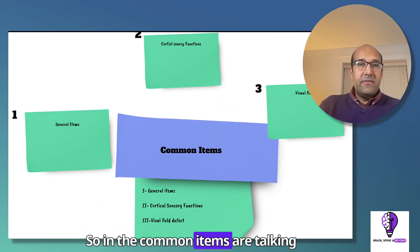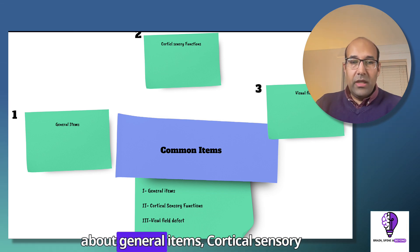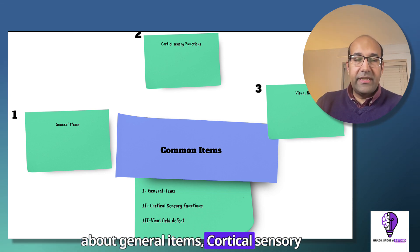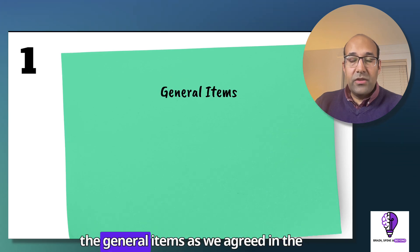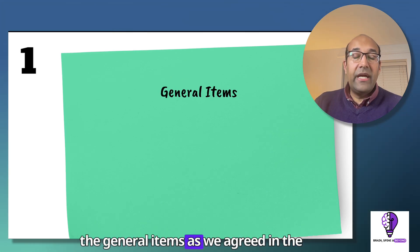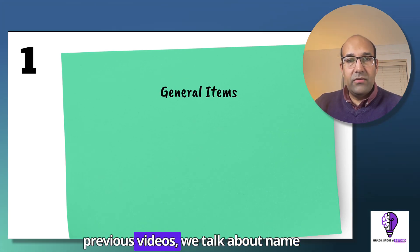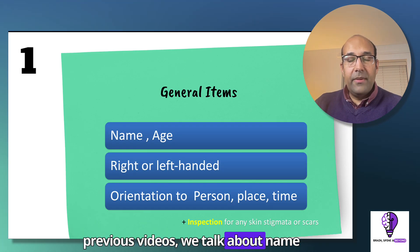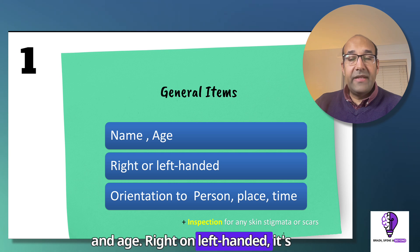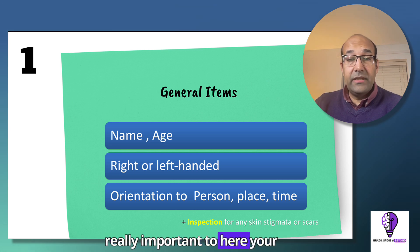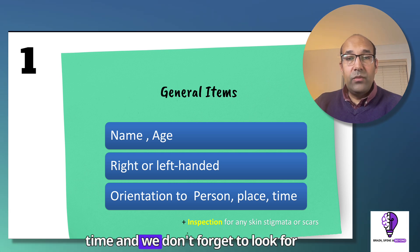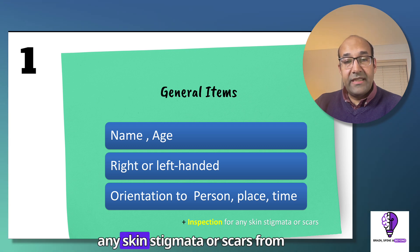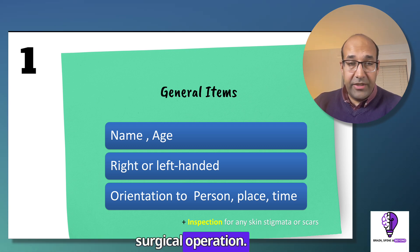In the common items, I'm talking about general items, cortical sensory functions, and the visual field effect. In the general items, as agreed in the previous videos, we talk about name and age — right or left-handedness is really important here — orientation to person, place and time, and we don't forget to look for any skin stigmata or scars from a surgical operation.